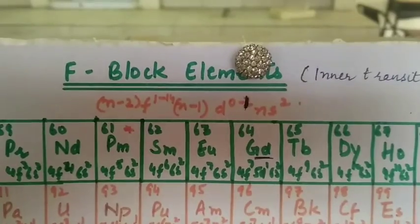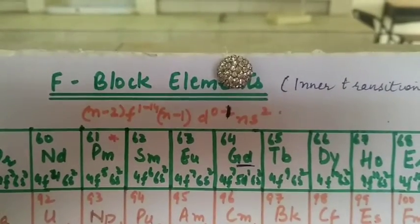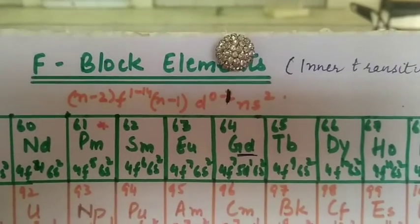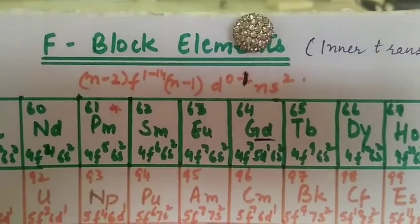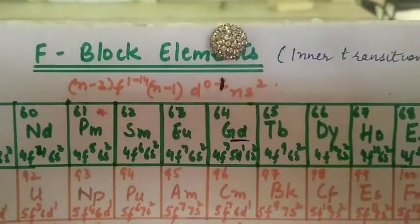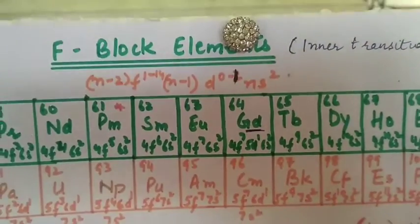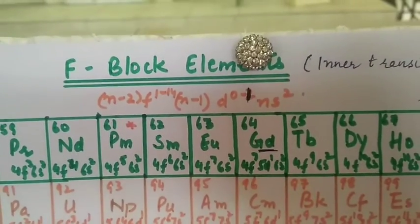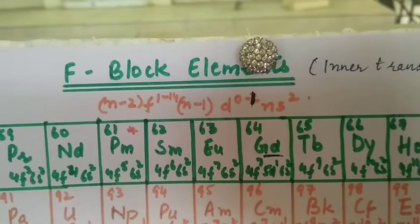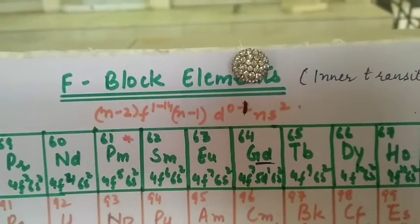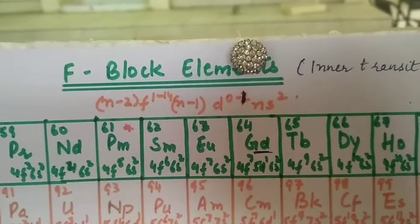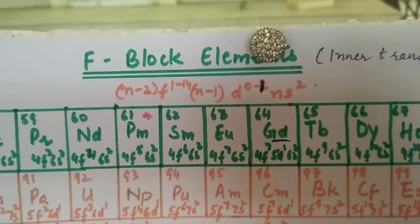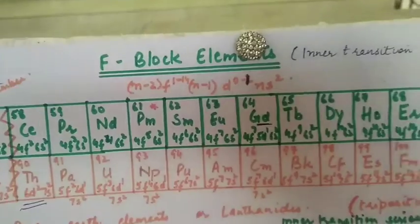The general electronic configuration of F-block elements is (n-2)f^1-14, (n-1)d^0-1, and ns^2. Electrons enter in ns first - two electrons enter in ns. Then they enter in f because f's energy is less than d.